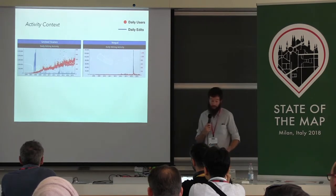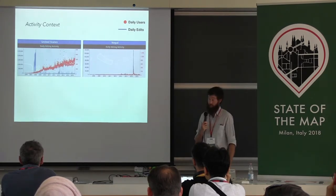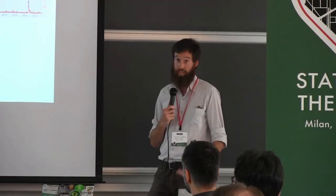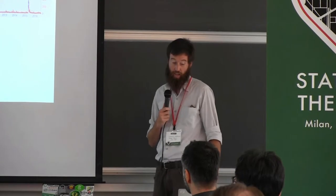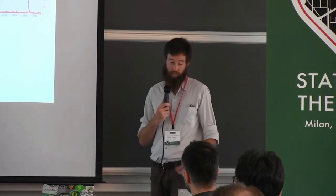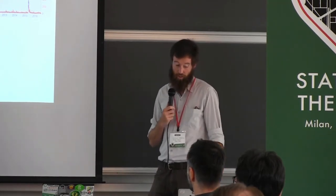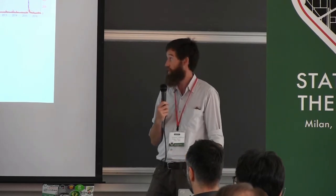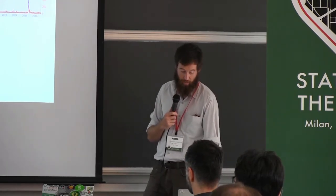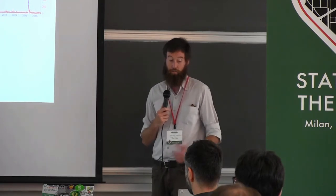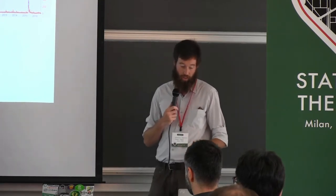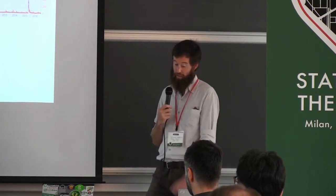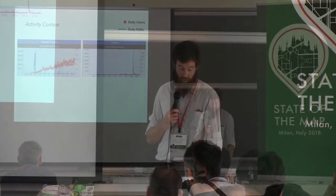The activity surrounding the mapping is going to have implications for how the data was contributed. The daily work of a paid mapper, for example, is likely detail-oriented, high-quality edits aimed at increasing coverage and completeness. A local mapping party is going to provide a lot of localized, highly detailed information about an area, while a disaster mapping event is going to involve a lot of remote tracing, little local knowledge, and a lot of new mappers.